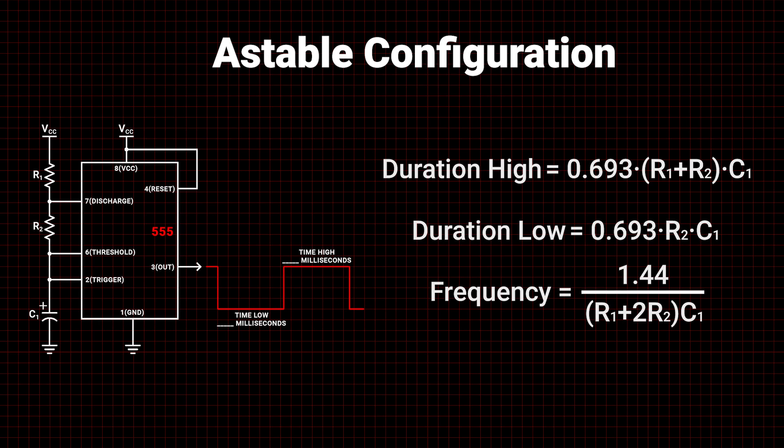The calculations for an astable configuration are a little different. Here R1, R2, or C1 will determine the high and low durations and the frequency of the pulses.